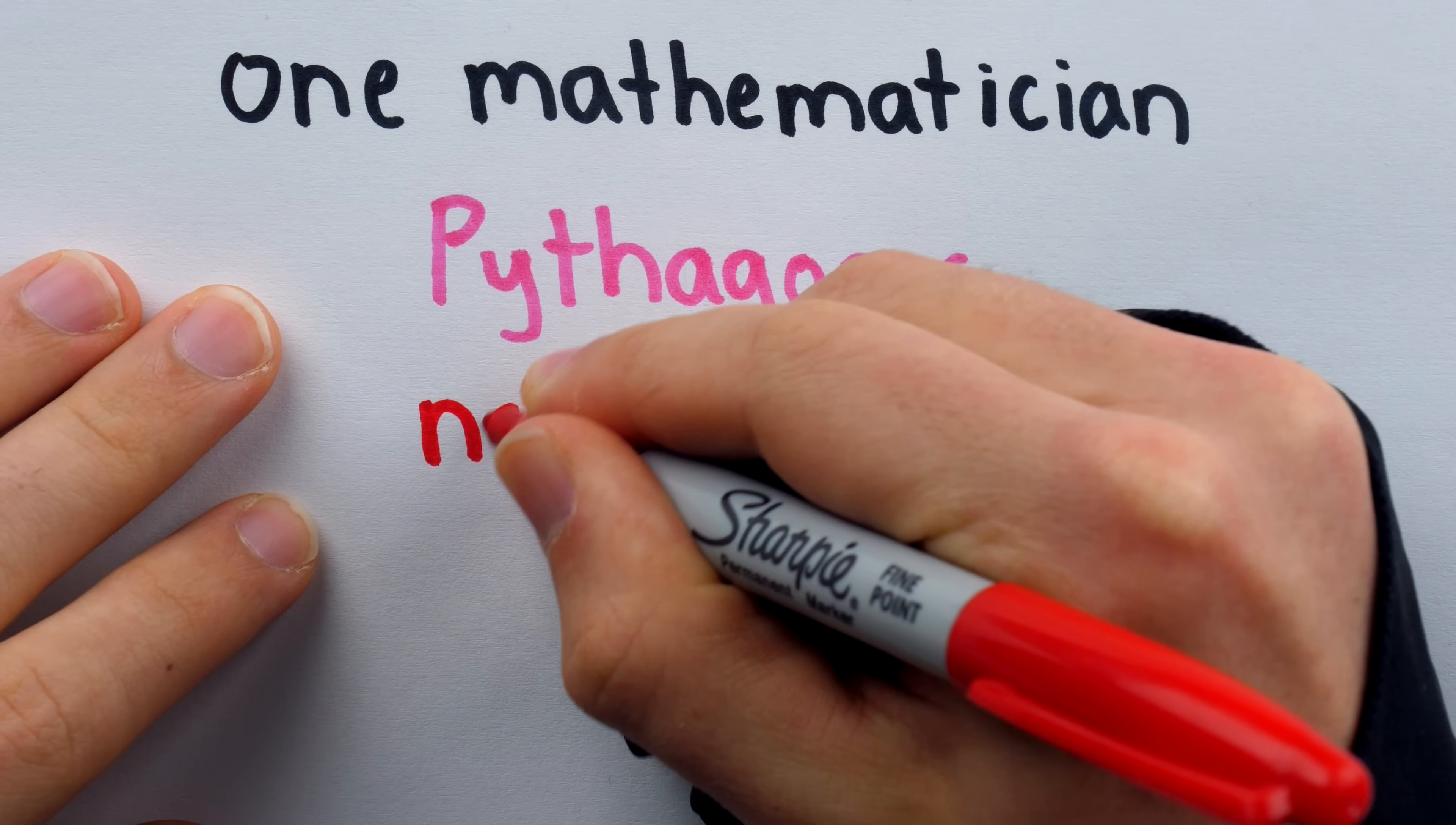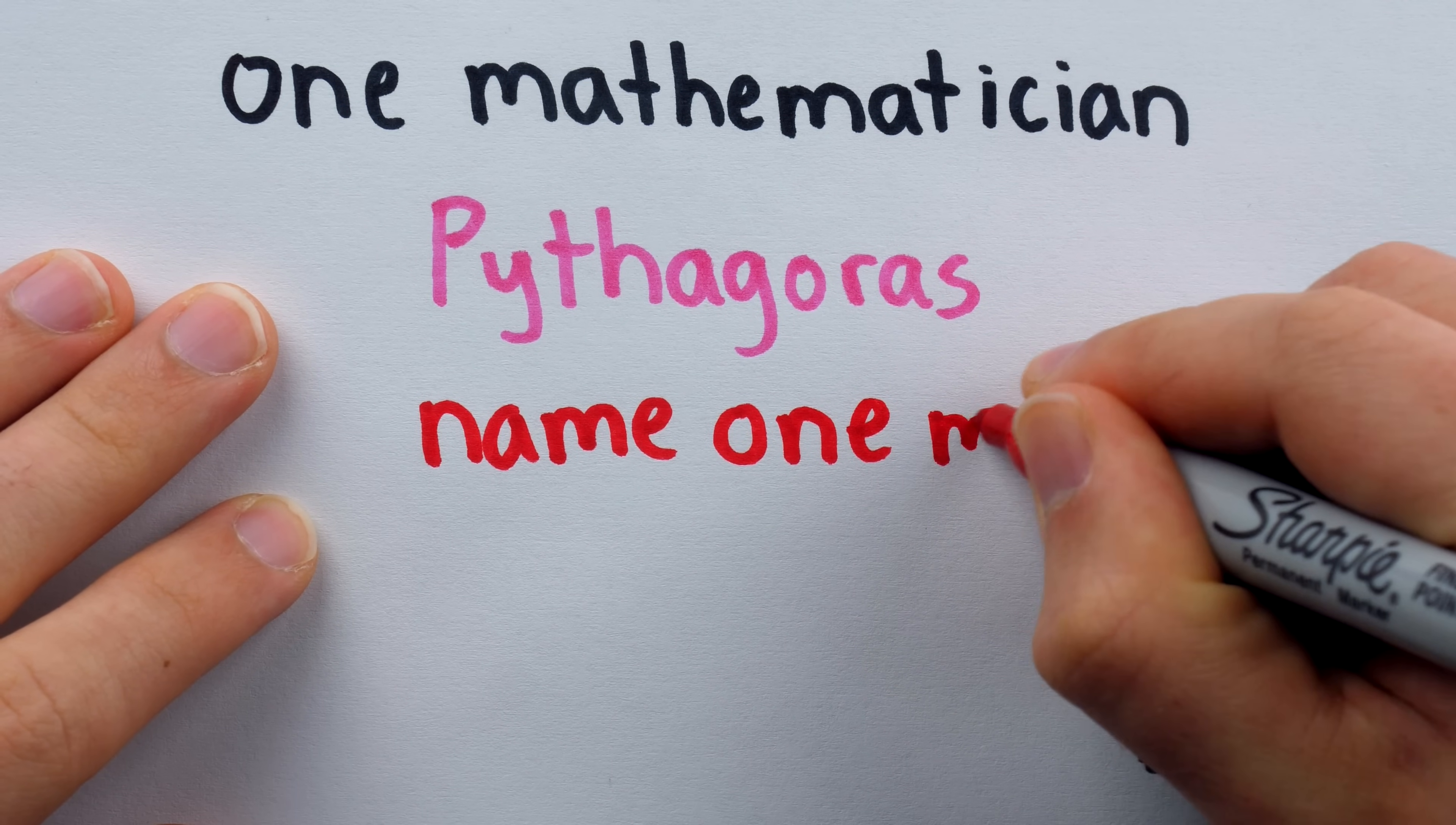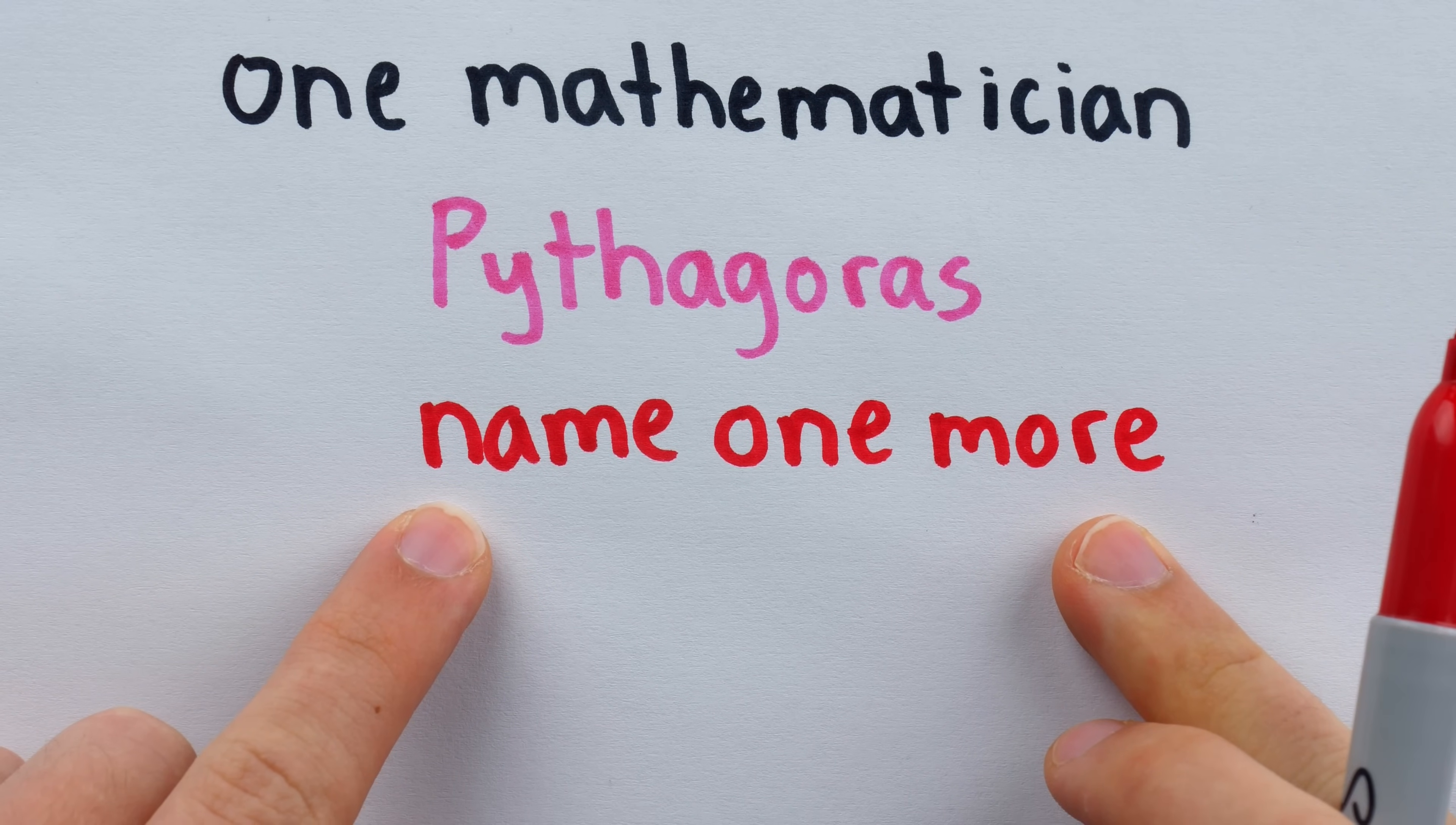But things get interesting if the challenge was excluding Pythagoras, or let's just suppose you had to name one more. Pythagoras is a surefire hit, but what if you had to name one more mathematician that this fresh high school graduate knows?